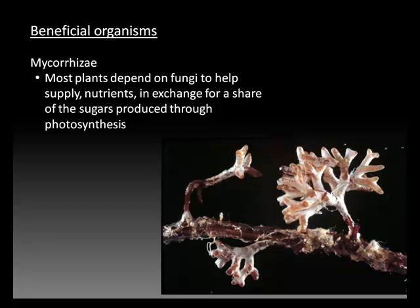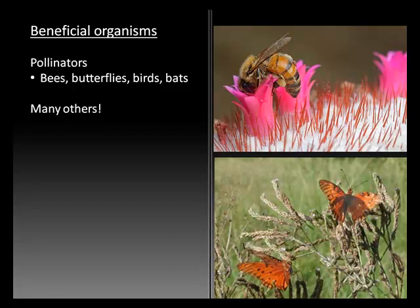Then there are the more familiar beneficial organisms, including the pollinators — the bee words: bees, butterflies, birds, and bats are some of the more familiar pollinators. In addition to pollinators, many insects — particularly ants — play an important role in collecting seeds from plants and taking them underground into an environment where the seeds have a very high probability of germinating and flourishing. There's a wide variety of beneficial organisms, and it's really cool to study them.